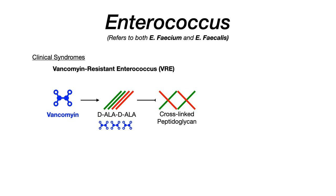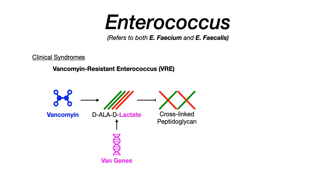In the case of VRE, the bacteria acquires the VAN gene, which alters D-ala-D-ala into D-ala-D-lactate. Once that terminal portion changes, vancomycin can no longer bind to the peptidoglycan and therefore can no longer prevent cross-linking. The enterococcal species can then freely cross-link its peptidoglycan and ignore the effects of vancomycin entirely.